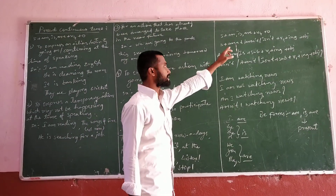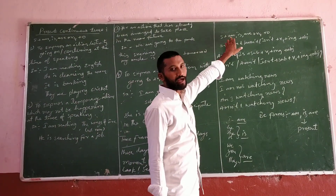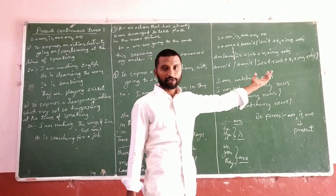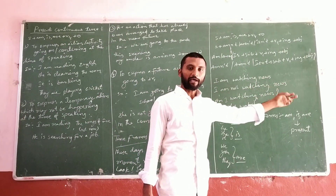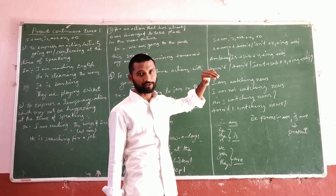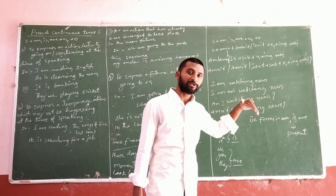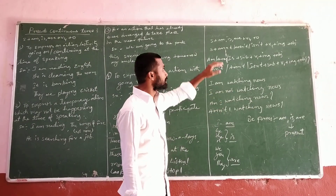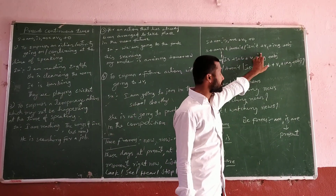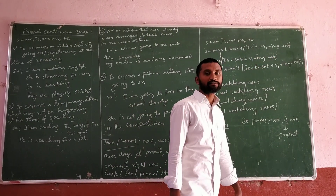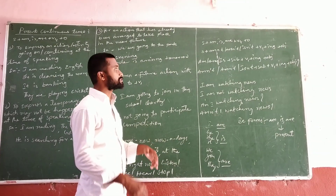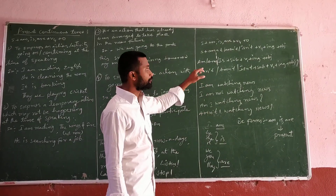If you see the structure once again: positive structure is Subject + am/is/are + V4 + Object, where V4 equals V1 plus -ing. The negative structure for present continuous tense is: Subject + am not / isn't / aren't + V1 + -ing + Object.